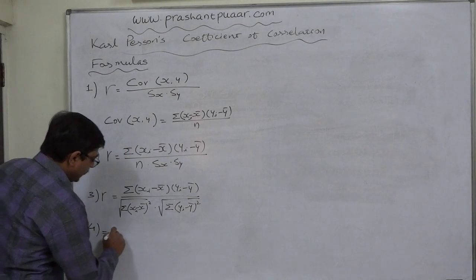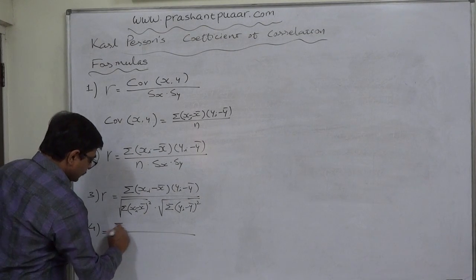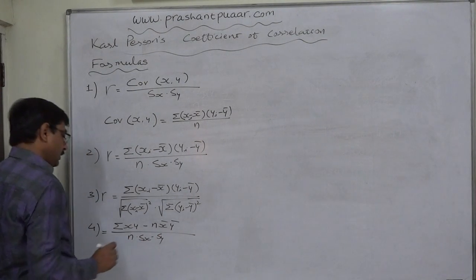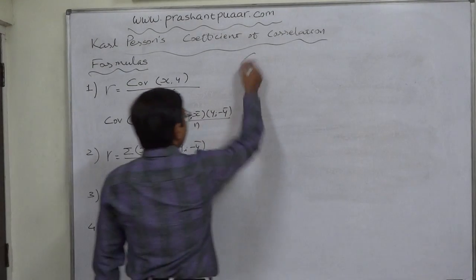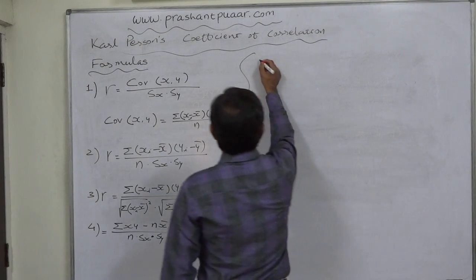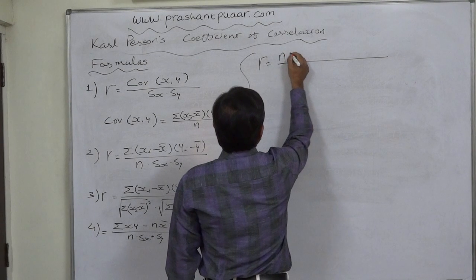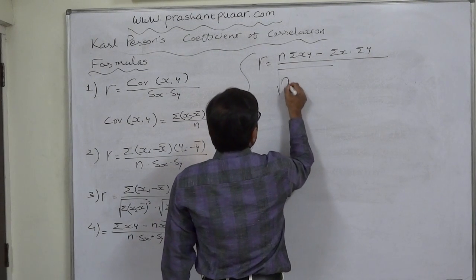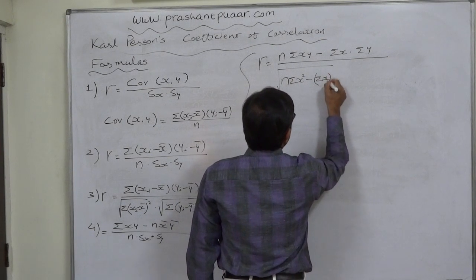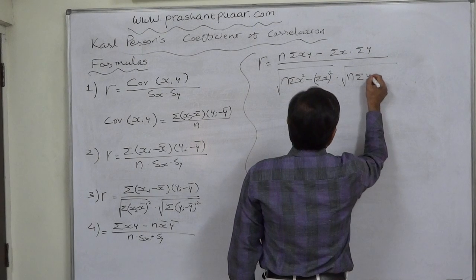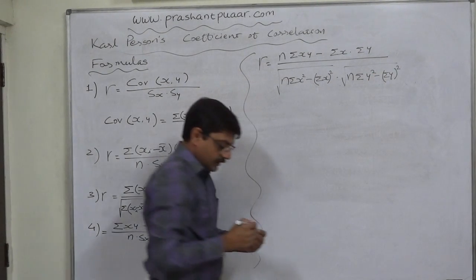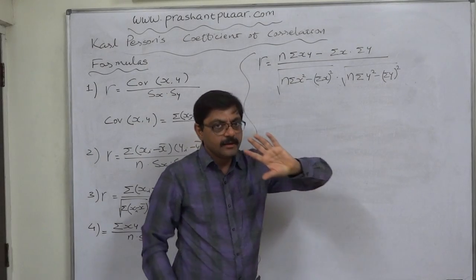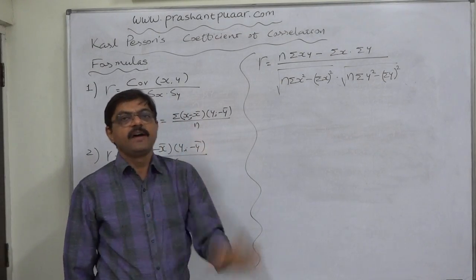Another formula can be derived by simplifying only the numerator: sigma xy minus n times x-bar times y-bar, divided by n times sx times sy. But the most preferred formula, after further simplifications, is: n sigma xy minus sigma x times sigma y, divided by the square root of (n sigma x-squared minus (sigma x) squared) into the square root of (n sigma y-squared minus (sigma y) squared). This is a favorite formula because it requires only five types of summations.